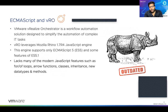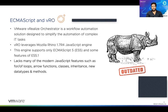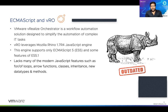What is the relationship between ECMAScript and VRO? VMware vRealize Orchestrator is a workflow automation solution designed to simplify the automation of complex IT tasks by leveraging a JavaScript engine, which is Mozilla Rhino 1.7. All this automation is done using JavaScript. However, this engine only supports ECMAScript 5 and some new features of ECMAScript ES5.1. If you remember from the last slide, ES5.1 was released in 2011, and where are we now? We are in 2021 — almost 10 years.